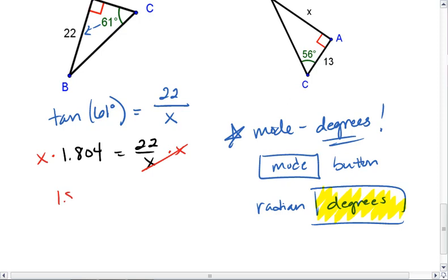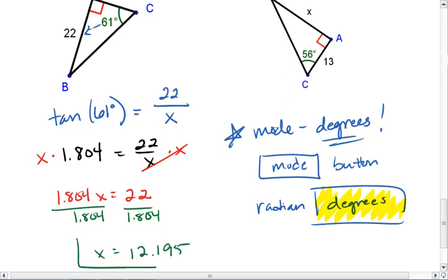We get 1.804x equals 22. To solve for x, we can divide by 1.804. We get x is approximately 22 over 1.804, which is 12.195. And there's our value for our missing side x.